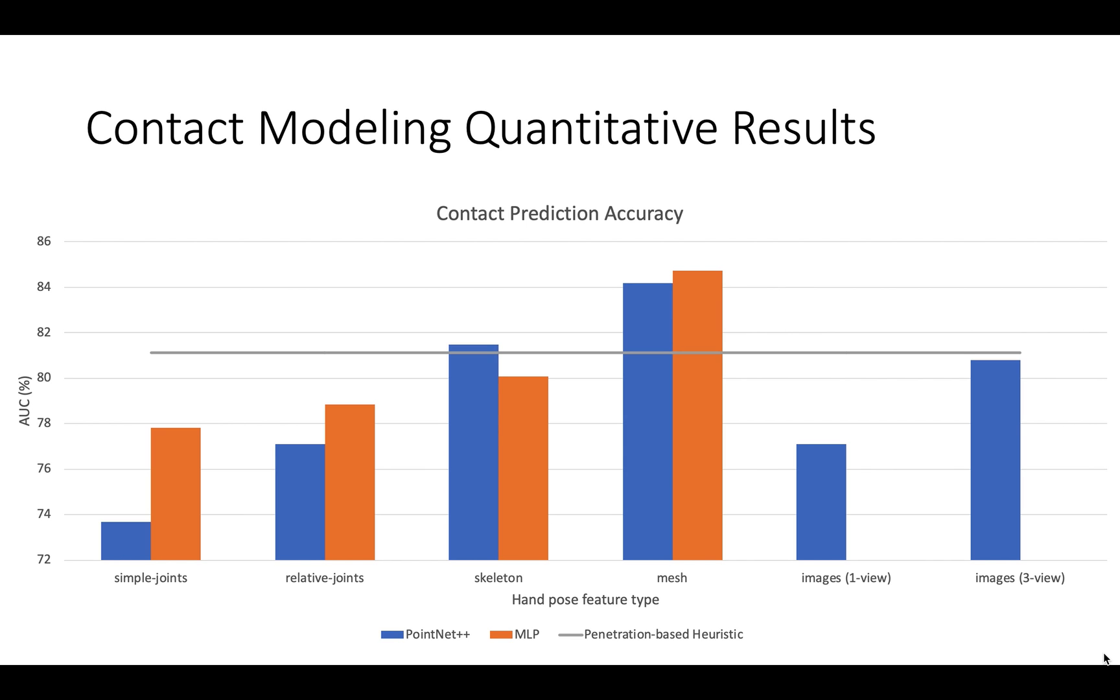Quantitatively, we see that machine learning enables algorithms using object point cloud and sparse hand features to outperform the heuristic that uses full object and hand meshes.